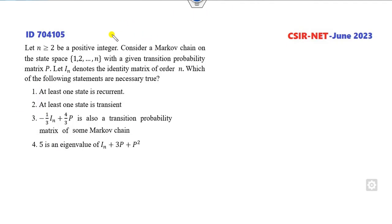Remember you have to read the statement very carefully. Let n ≥ 2 be a positive integer. Consider a Markov chain on the state space {1,2,...,n} with a given transition probability matrix P. Let I_n denote the identity matrix of order n. For the sake of simplicity, I consider n = 2 because it is true for each positive integer. So I can consider n = 2 so that my calculation becomes simpler.